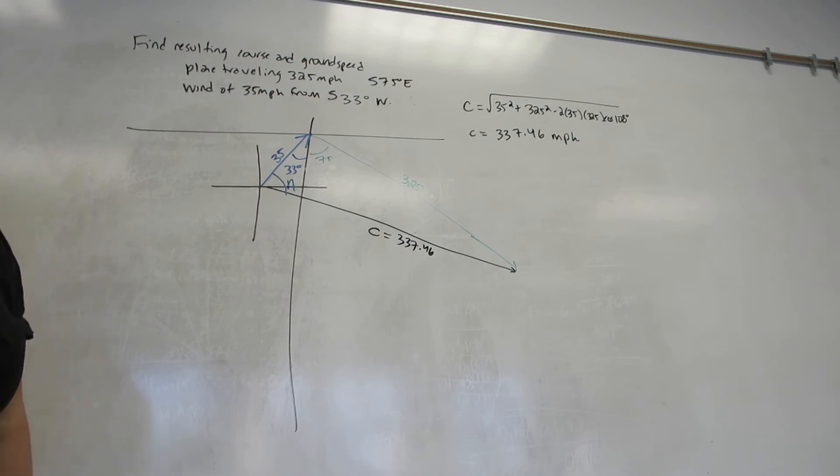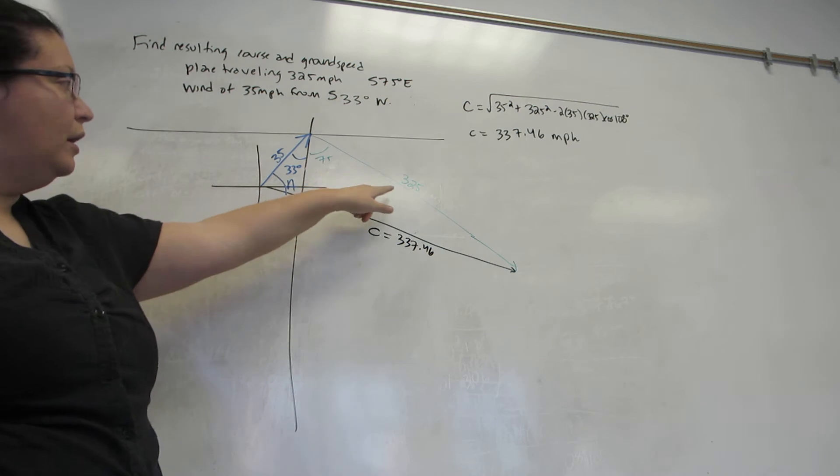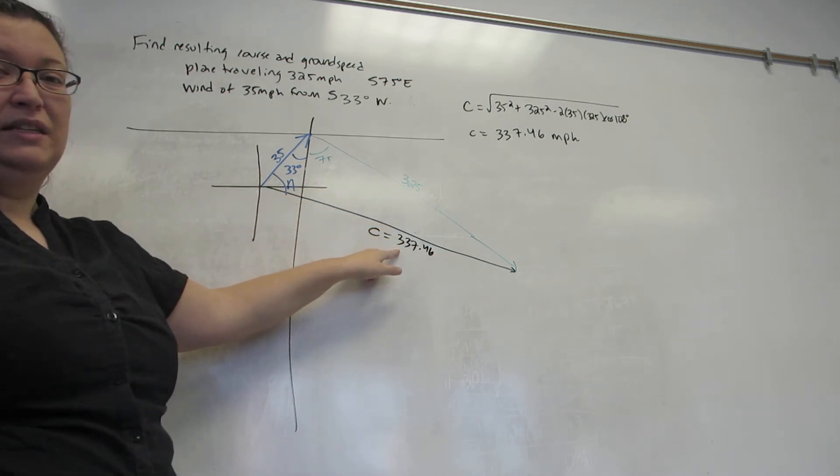You almost always use law of sines for this. Now in this case, I don't have to go backwards and find this one first, because notice that this angle is opposite the 325, which is not the biggest side.